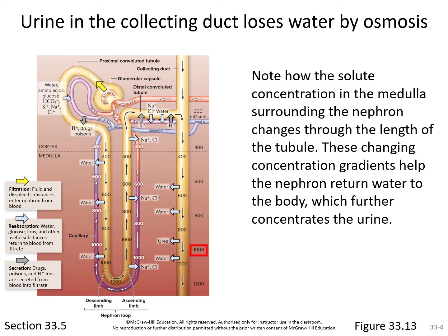Notice how the solute concentration in the medulla surrounding the nephron changes throughout the length of the tubule. Looking at the numbers on the right side of the diagram: just above the dotted line it says 400, then moving down: 600, 800, 1000, 1200. This indicates the amount of solutes in the fluid surrounding the nephron increases as you go deeper into the kidney — the fluid gets saltier. As the filtrate moves through the tubule, following the green arrow down and back up, water moves out of the tubules going down and back in going up, forming a gradient.